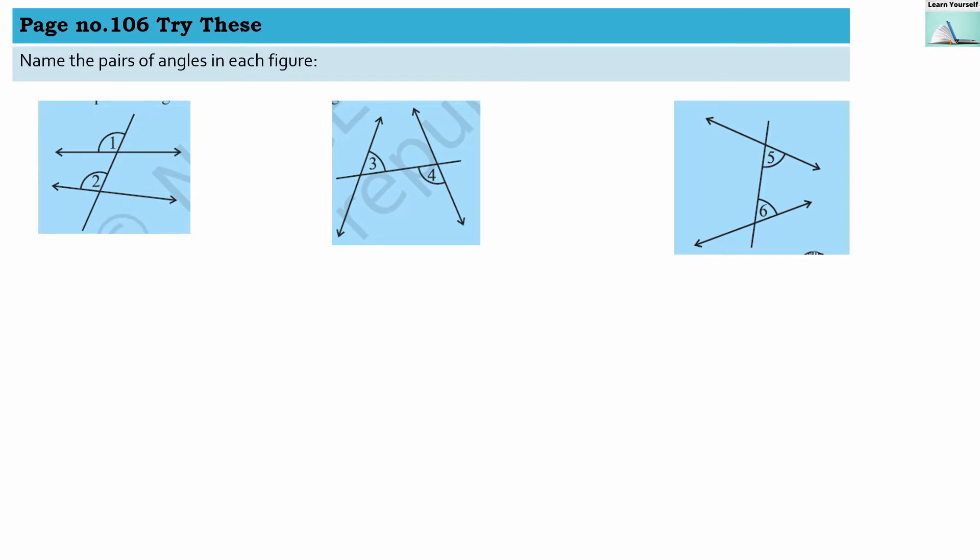Let us solve this. First, in the first example, there are two angles: one angle is here and the second angle is here. These two angles are a pair of corresponding angles. Then the third angle is here and the fourth angle is here. Both angles are interior angles and they are not on the same side; they are diagonally opposite to each other, so they are alternate interior angles.